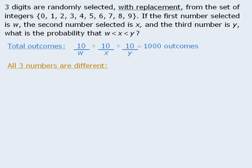To do this we will once again take the task of selecting three numbers and break it into stages. When it comes to selecting the first number there are ten ways to accomplish this stage. Next, since the second number must be different from the first number, there are nine ways to select the second number.